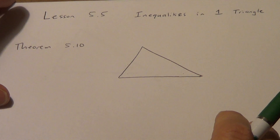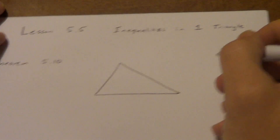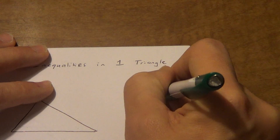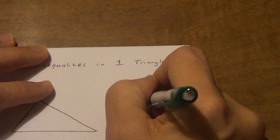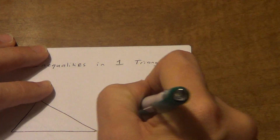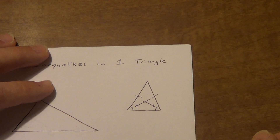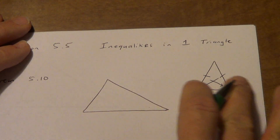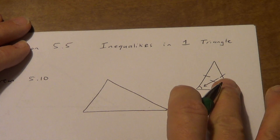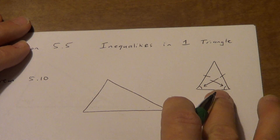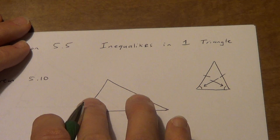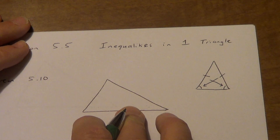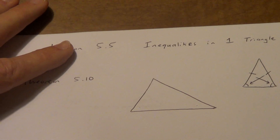Remember when we drew those arrows for isosceles triangles? If those two sides were congruent, we came across and said that angle is congruent to that angle — that was our base angle theorem. The same idea is going on here except we don't have congruent marks. If they are congruent, we get congruent angles. If they're not congruent, we get non-congruent angles, so one must be bigger than the other.